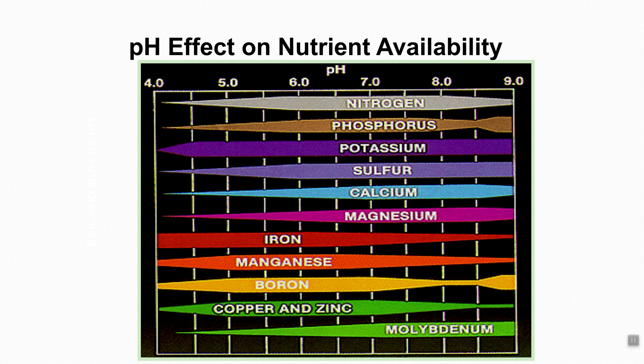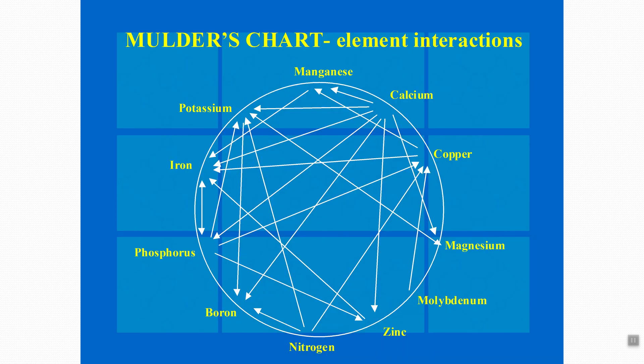Here is a chart showing what nutrients are available depending on your soil pH. Most nutrients are most available in the range between 5.5 and 7.5. Most people have seen Mulder's chart — as you can see, there are interactions in uptake between different nutrients depending on whether there is an antagonism or a benefit between them.